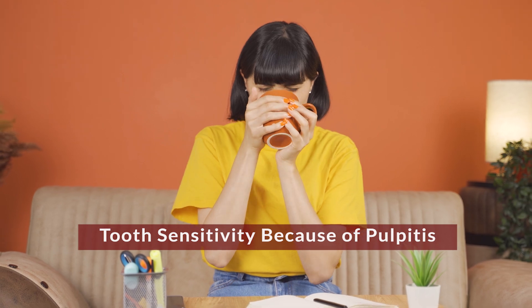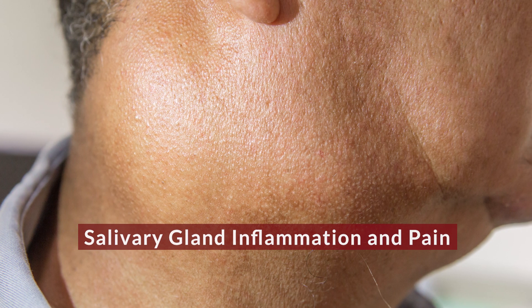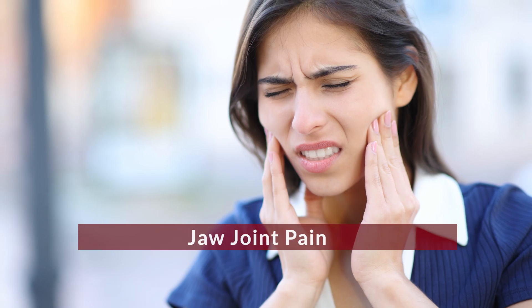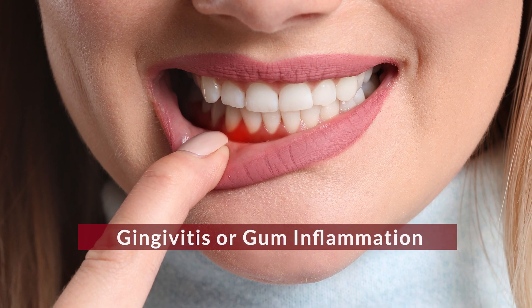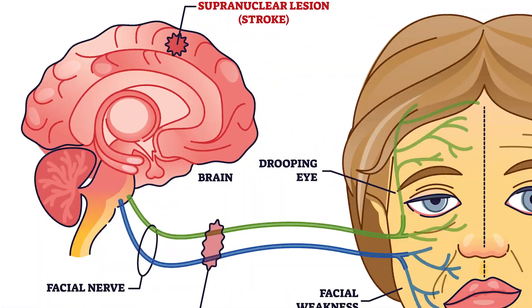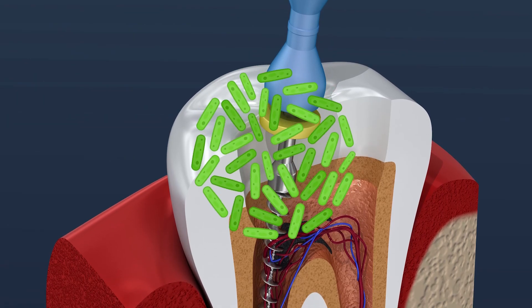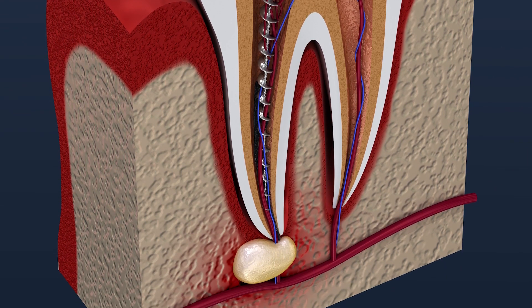Lyme disease can trigger pain in your face, neck, head, and teeth, and cause symptoms such as tooth sensitivity due to pulpitis, bad breath, acidic oral pH, dry mouth, salivary gland inflammation and pain, burning mouth syndrome, jaw joint pain, trigeminal nerve pain, gingivitis or gum inflammation, periodontitis or gum disease, and neurological complications to the facial cranial nerve causing Bell's palsy. In Stage 2, Lyme-related microbes and spirochete bacteria can accumulate around root canal teeth where the blood supply and lymphatic systems are cut, leading to Stage 3 Lyme disease and chronic or post-treatment Lyme disease syndromes where symptoms linger.